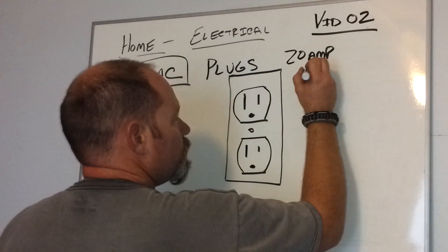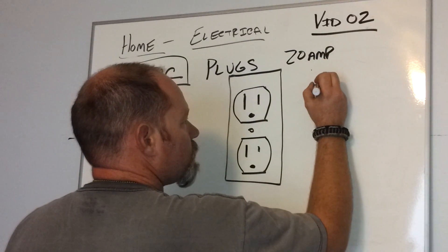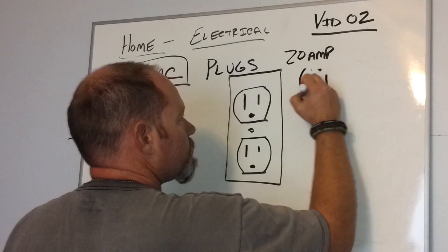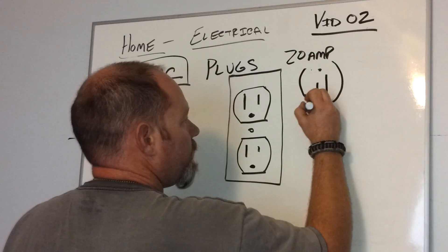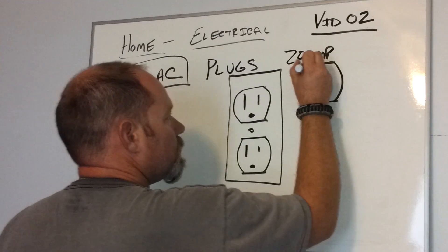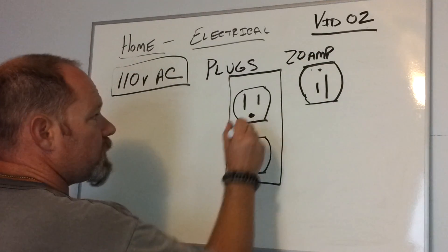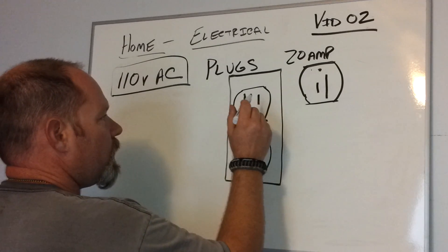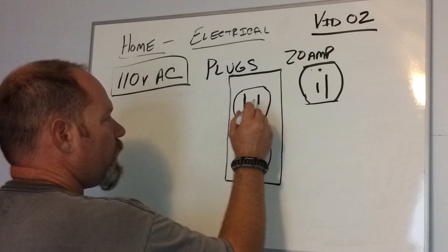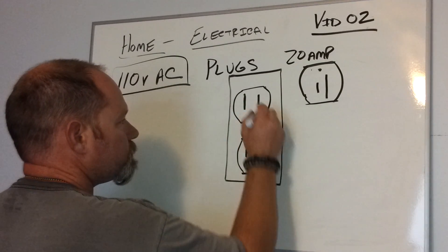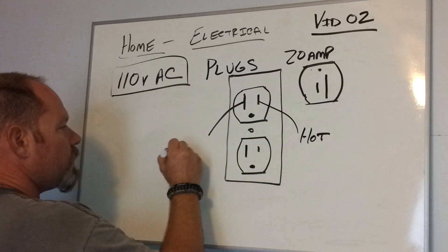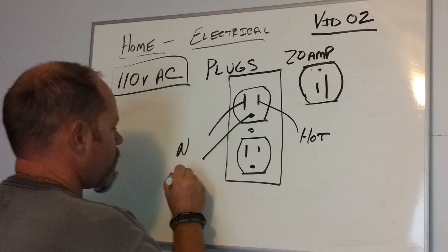In some cases, you may see them installed backwards where the short and the long are reversed, but this is the way they should be. So what you have here is: this one's hot, this one is neutral, and this one is ground.